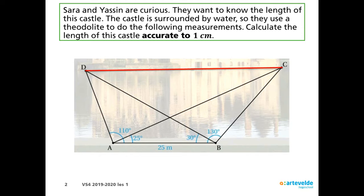Sarah and Yassin are curious — they want to know the length of this castle. The castle is surrounded by water, so they use a theodolite to do the following measurements. Calculate the length of this castle accurate to one centimeter. We have a number of data points and a number of unknown lengths and angles. There are multiple ways to solve this problem, but it's more convenient to use a step-by-step plan.